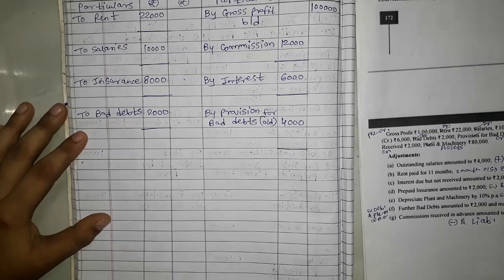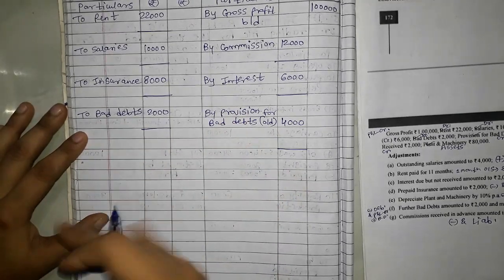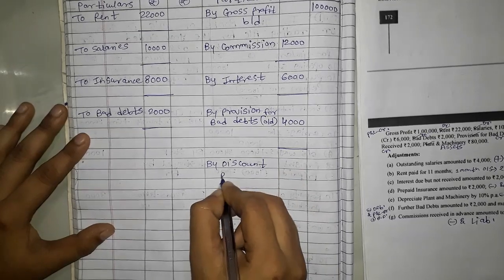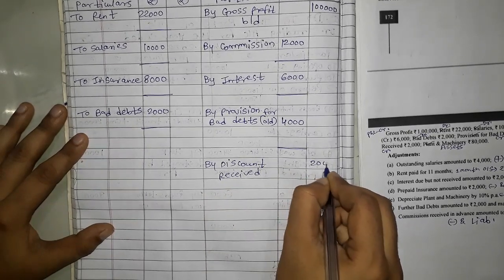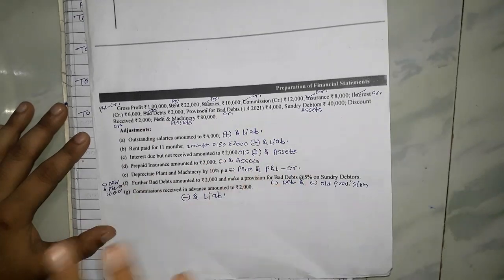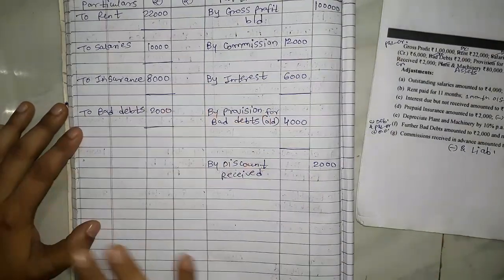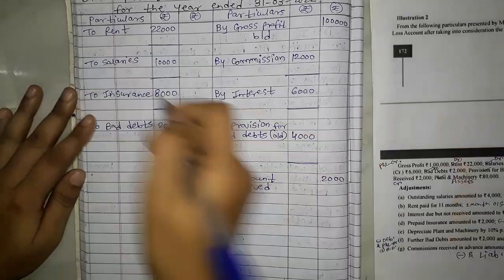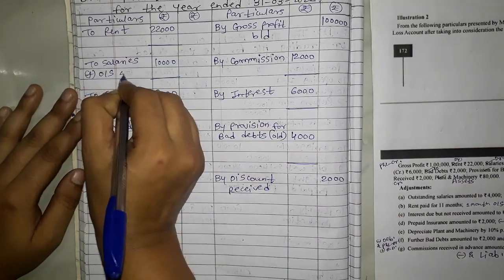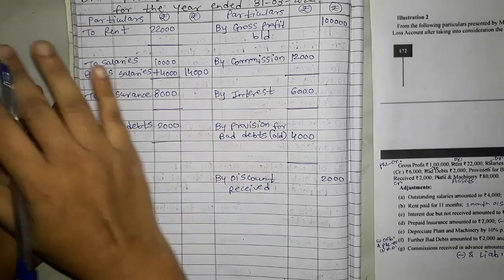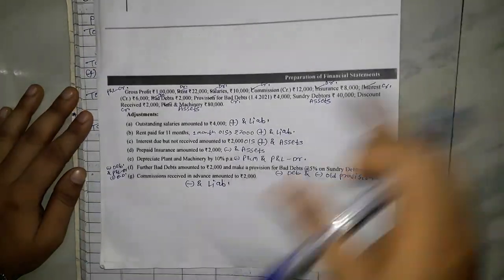After that sundry debtors — assets, leave it for now. After that discount received — credit side — no adjustment, so directly write: 'By Discount Received' 2,000. Thereafter plant and machinery — it is an asset, we will handle it when depreciation comes. Now, taking adjustments one by one: Outstanding salary — add it to salary — liability, but we don't have a balance sheet so ignore that effect. Just add: 'Add Outstanding Salaries' 4,000. So here salary total is 14,000. First adjustment is done.